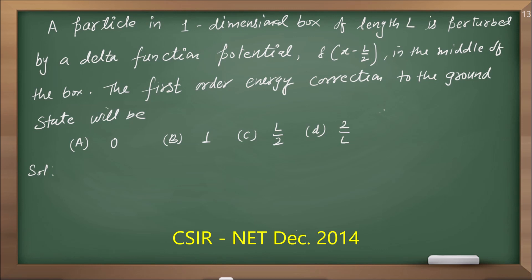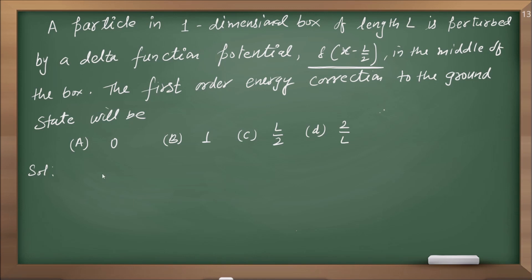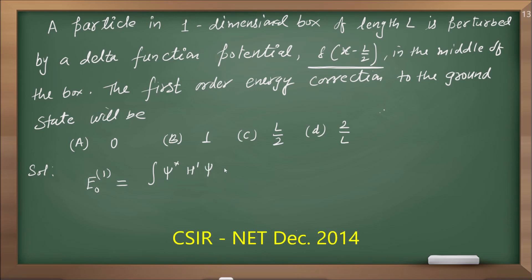So this is the question. अब इस question में सबसे पहले देखो — this is the perturbation. Perturbation हमें दी हुई है: δ(x − L/2), delta function potential दिया हुआ है। तो आपको पता है कि जब हम first-order energy correction find out करते हैं, उसके लिए relation होता है: E¹ = ∫ ψ* H' ψ dτ.